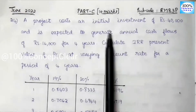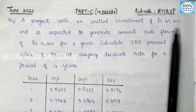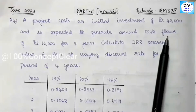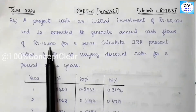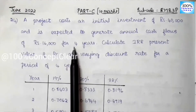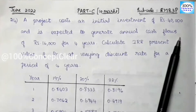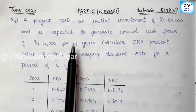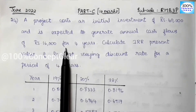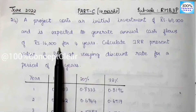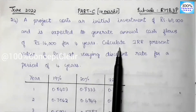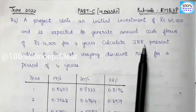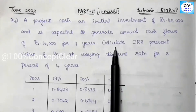First, we have an initial investment of Rs.40,000. And the annual cash flow is Rs.16,000 for 4 years. We have to calculate IRR, which is the Internal Rate of Return. We are going to calculate it.